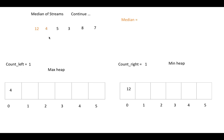Now if the user asks for the median at this moment, count_right and count_left are the same, so the result is the average of the root elements of the min heap and max heap. In this case it's 8, which is (12 + 4) / 2.